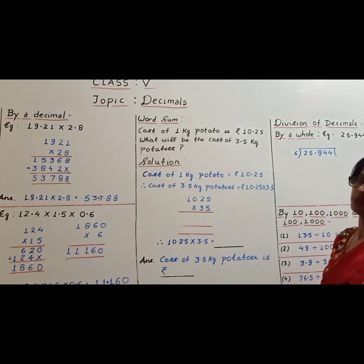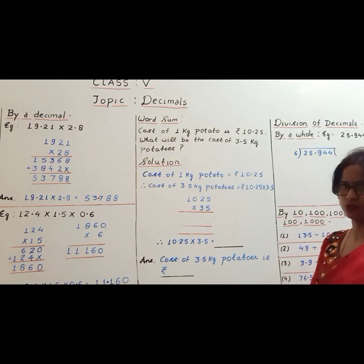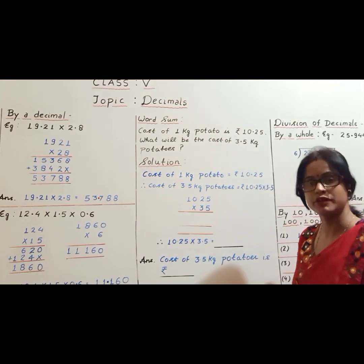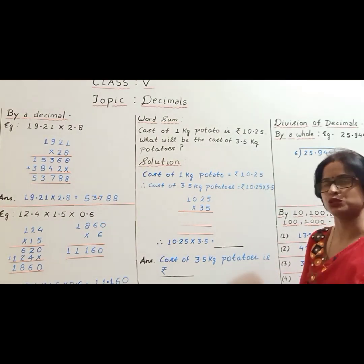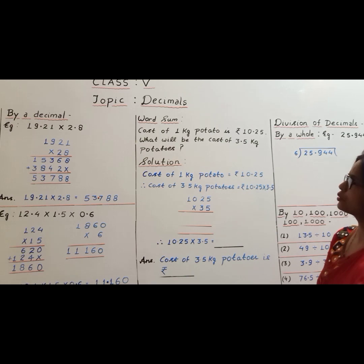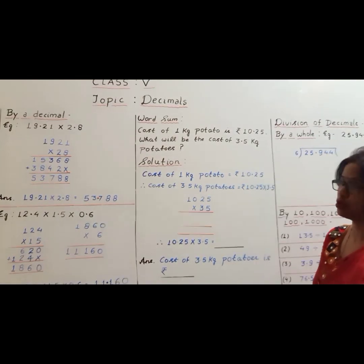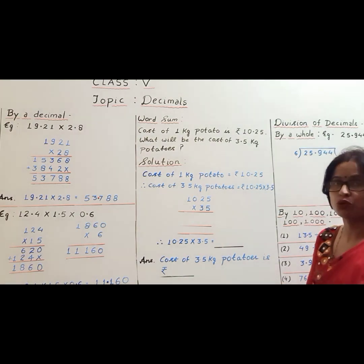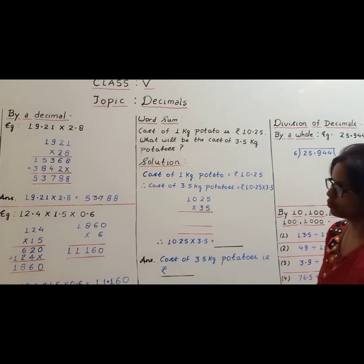Let's discuss a word problem. The cost of 1 kg of potato is ₹10.25. What will be the cost of 3.5 kg of potatoes? To solve the word problem, first identify the operation. Cost of 1 kg is given and we have to find the cost of more — more means multiplication — so we have to use multiplication here.